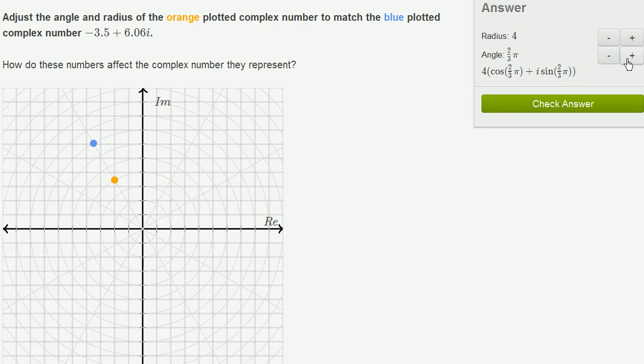So we increase the angle to 2 pi over 3. This seems to be the right direction, and we just have to increase the radius a little bit. So there we have a radius of 7, an angle of 2 thirds pi.